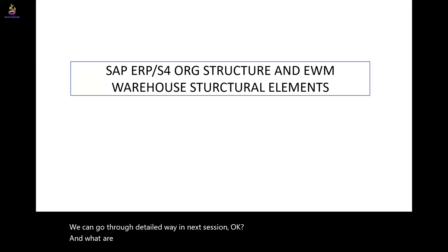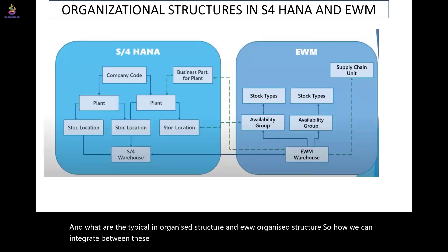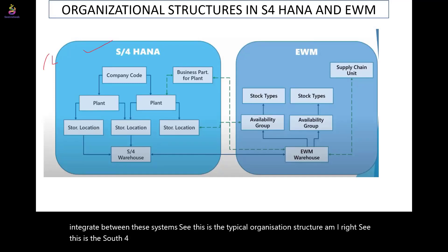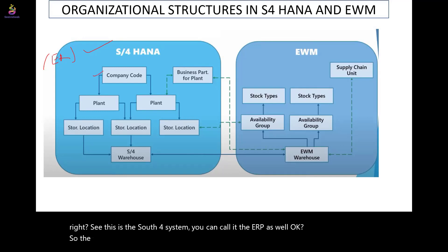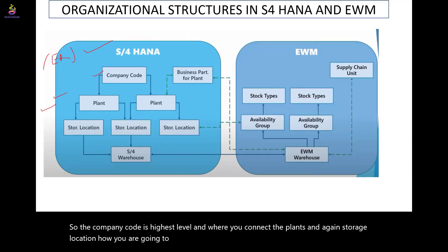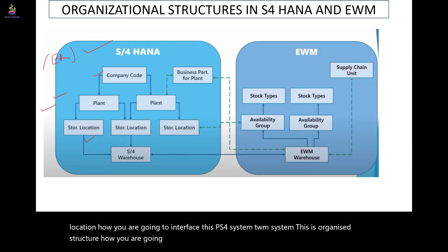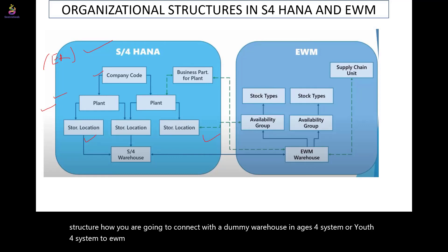What are the typical organized structures in S4 and EWM, and how can we integrate between the systems? This is the typical organizing structure in S4 — you can call it the ERP system. The company code is the highest level, where you connect the plants and storage locations. This is how you interface the S4 system to the EWM system, connecting through a dummy warehouse.